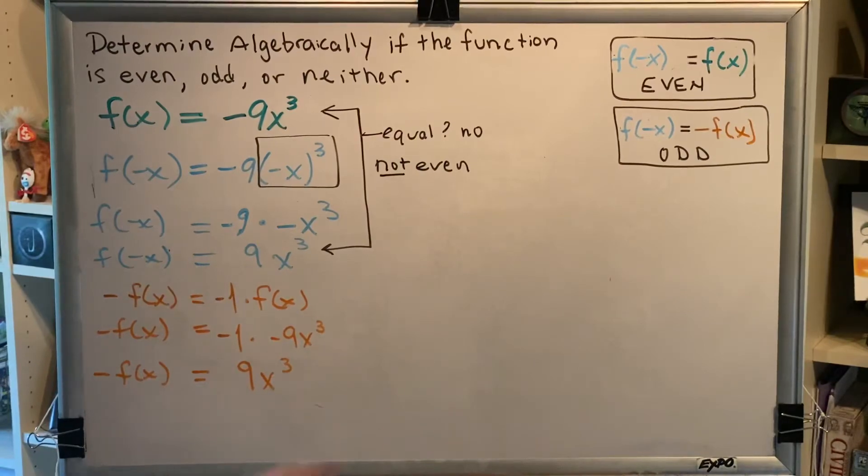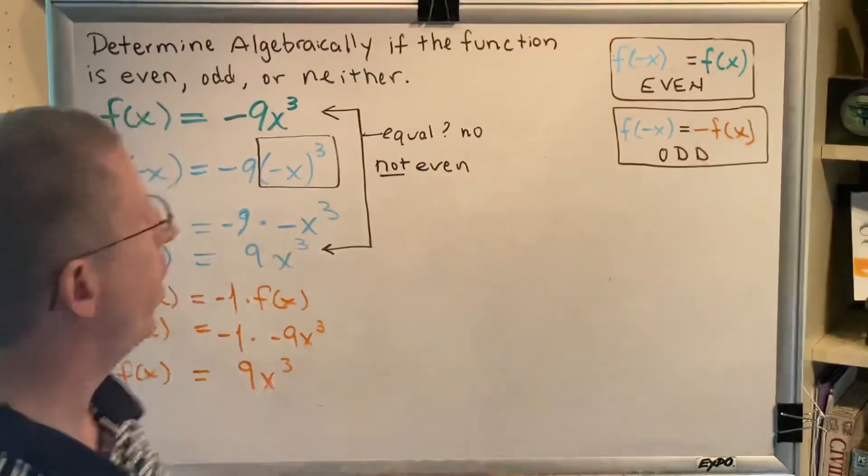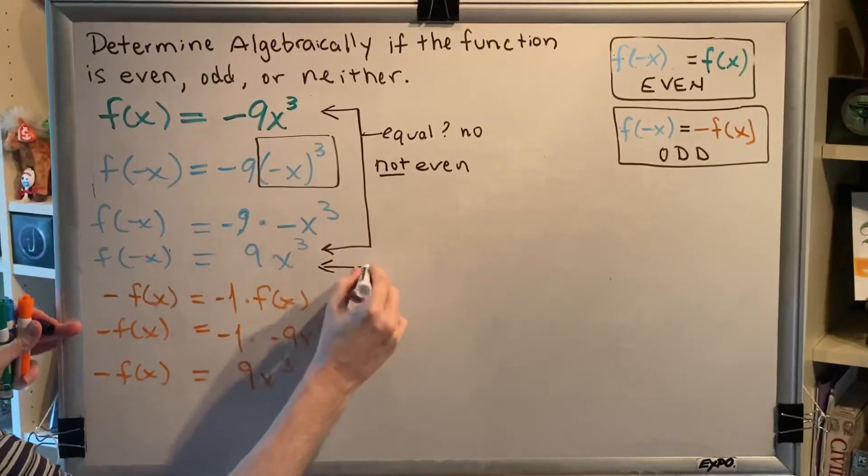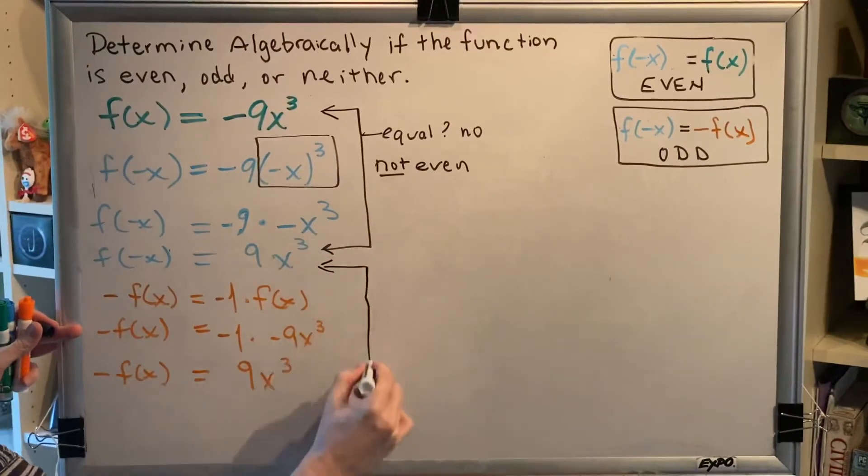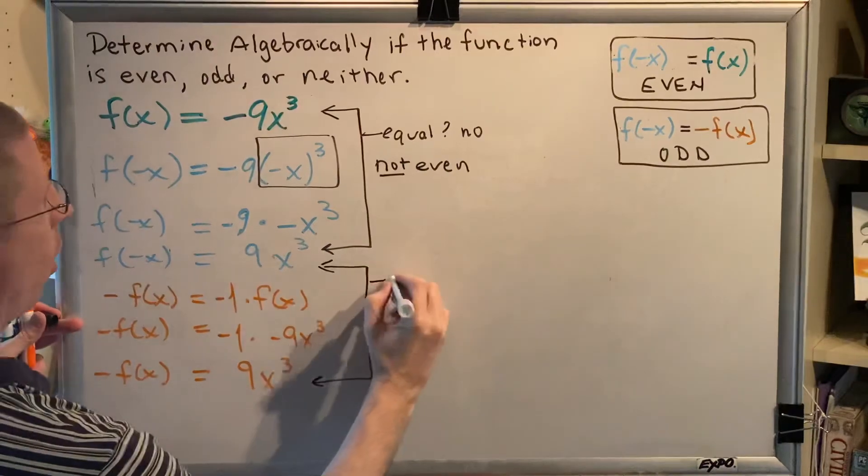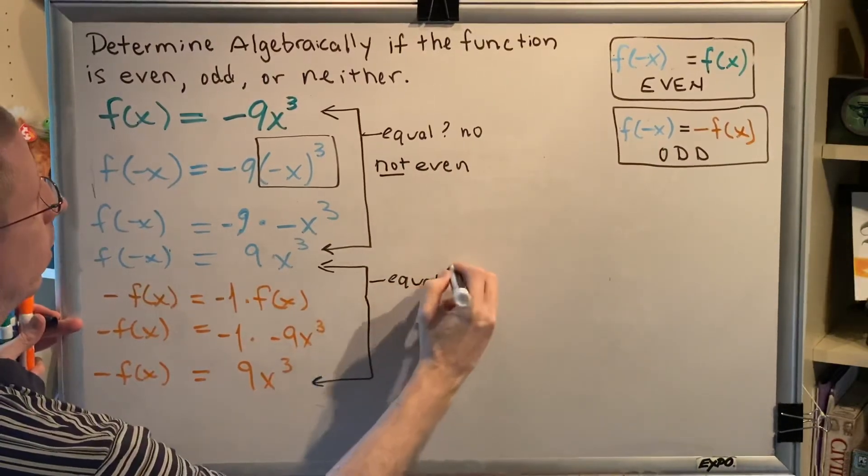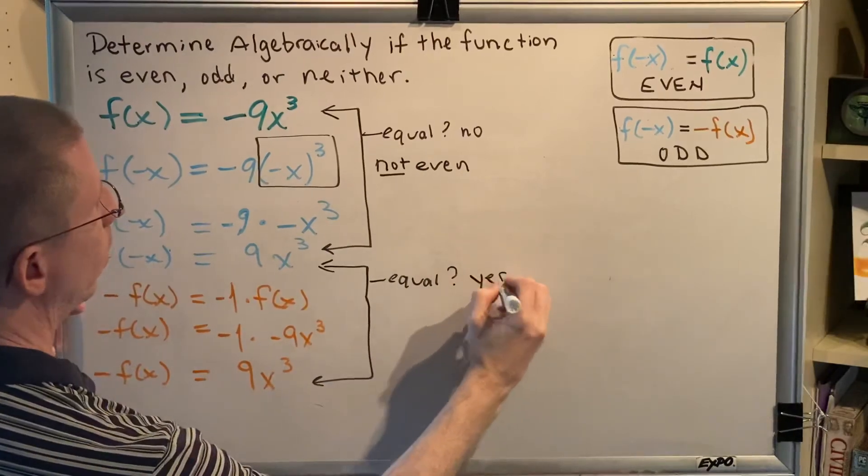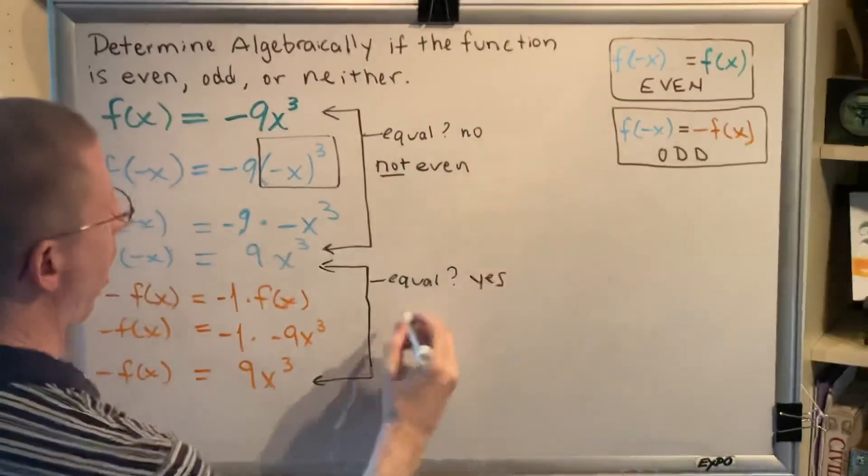We're now ready for our next comparison. We're going to compare the light blue with the orange. We're comparing f of negative x with negative f of x. We want to know, are these equal? And the answer is yes. Therefore, we are dealing with an odd function.